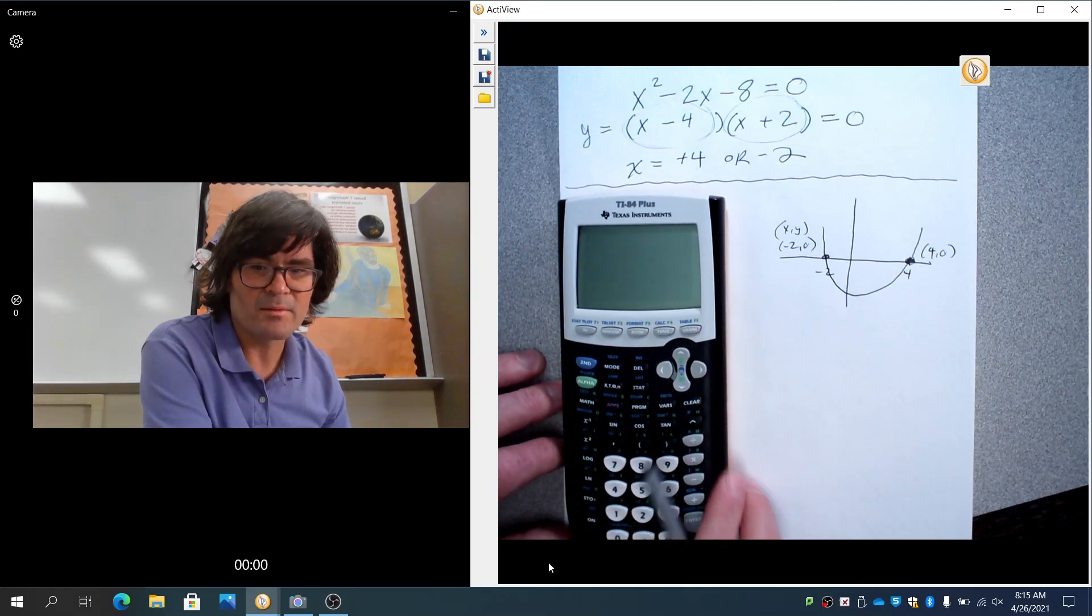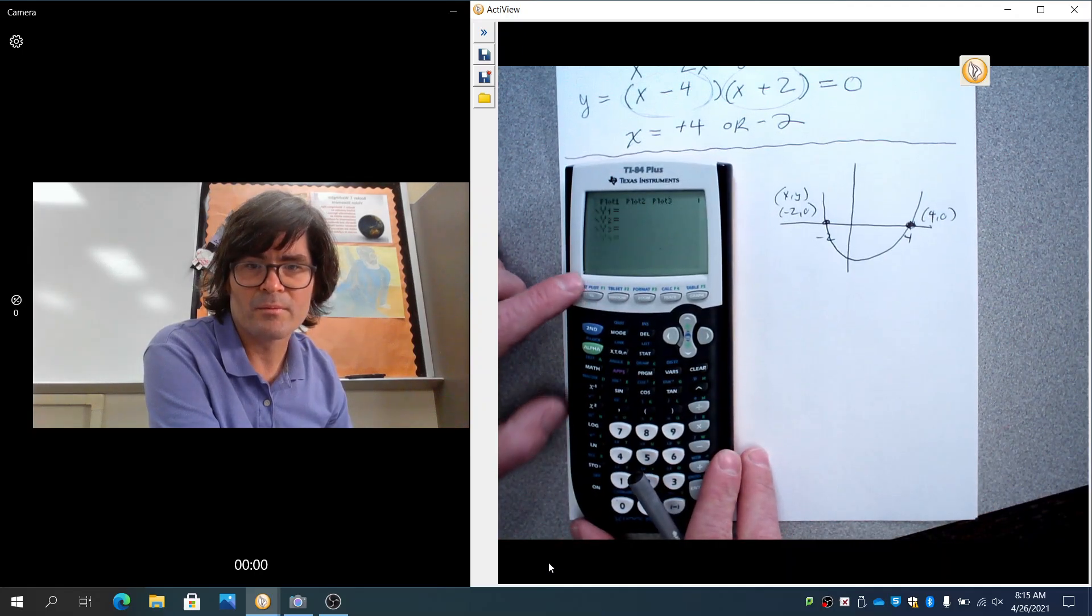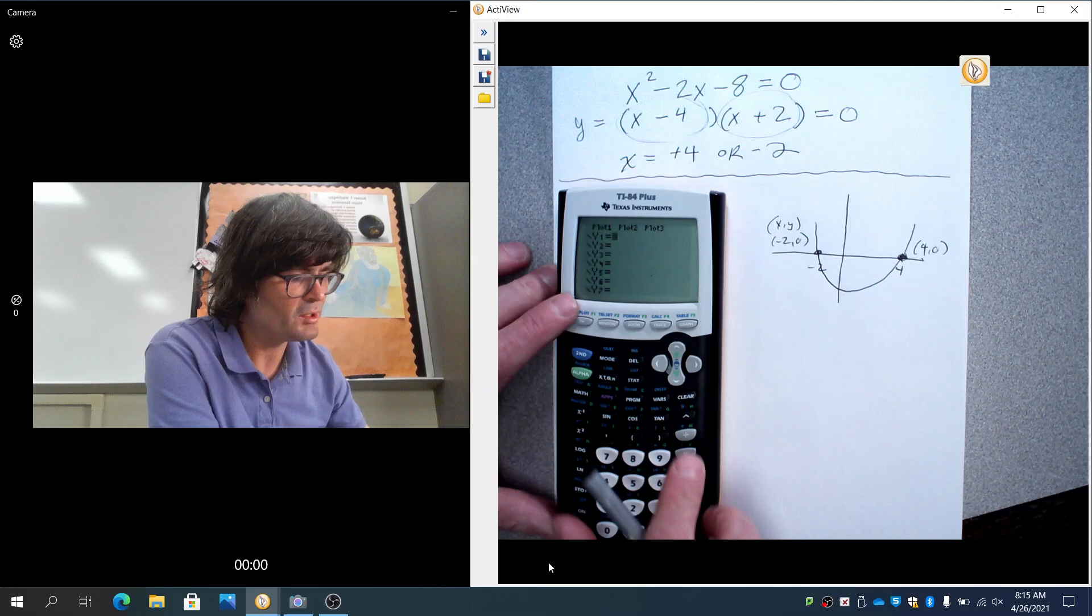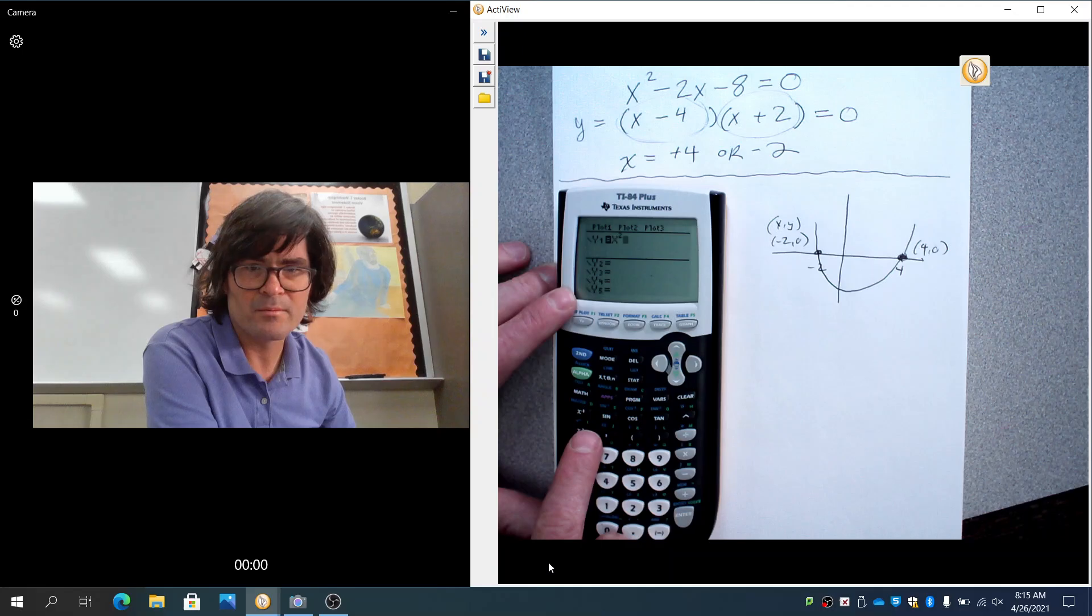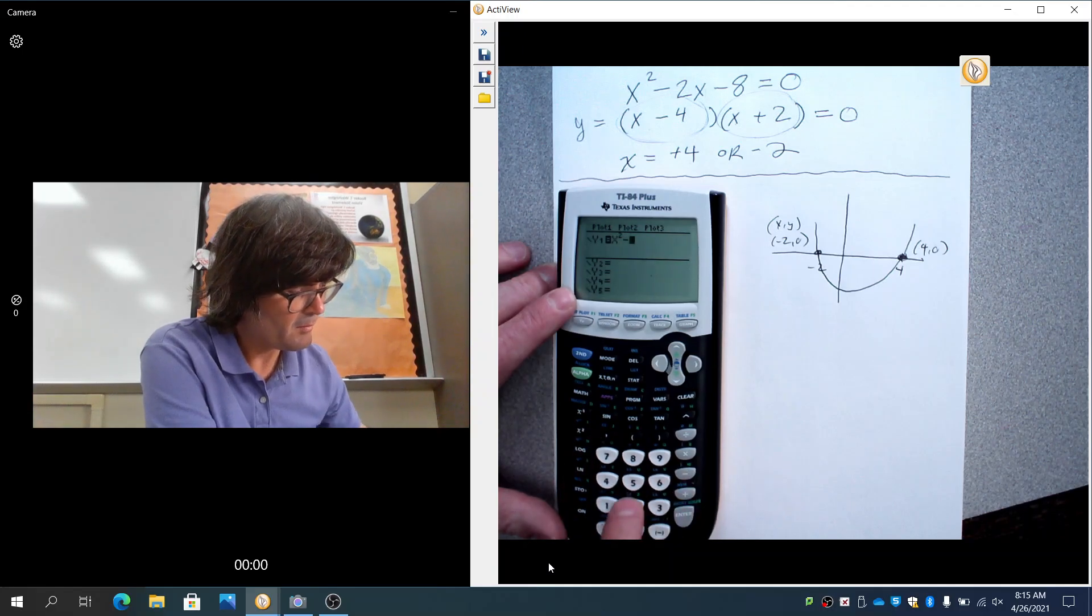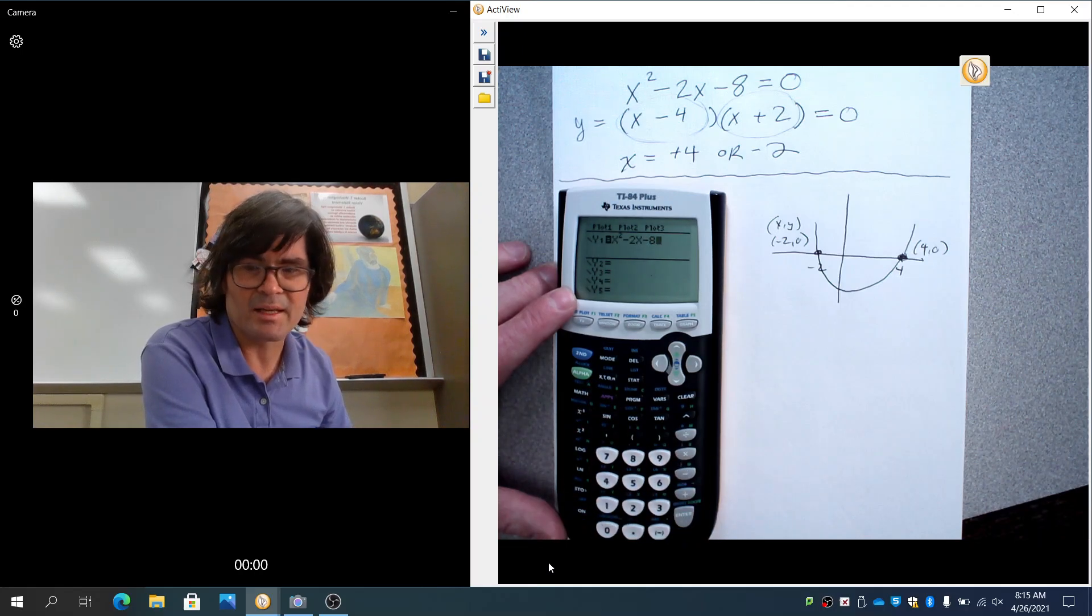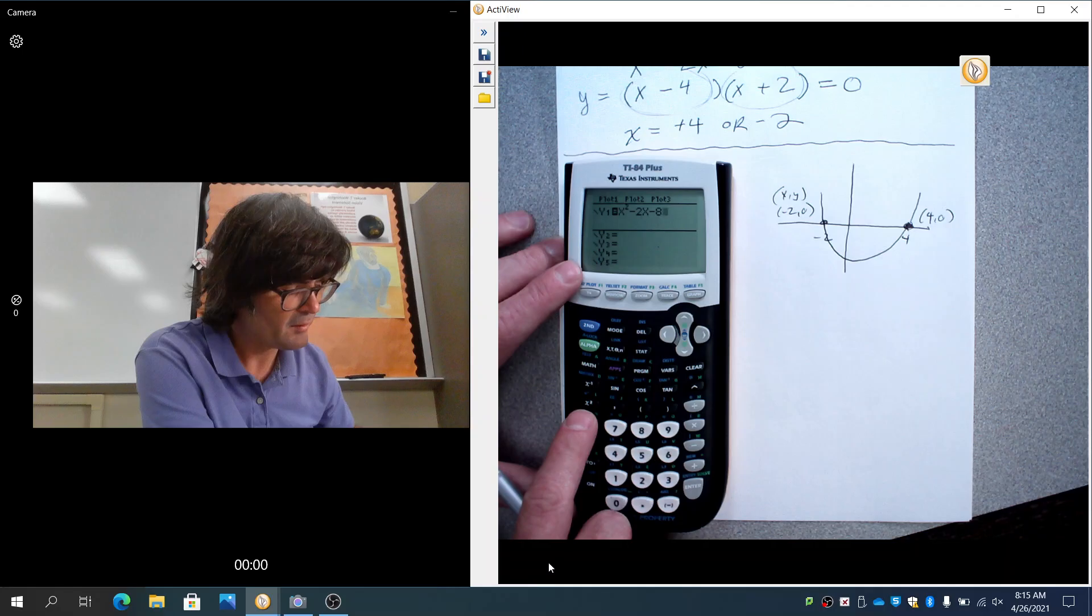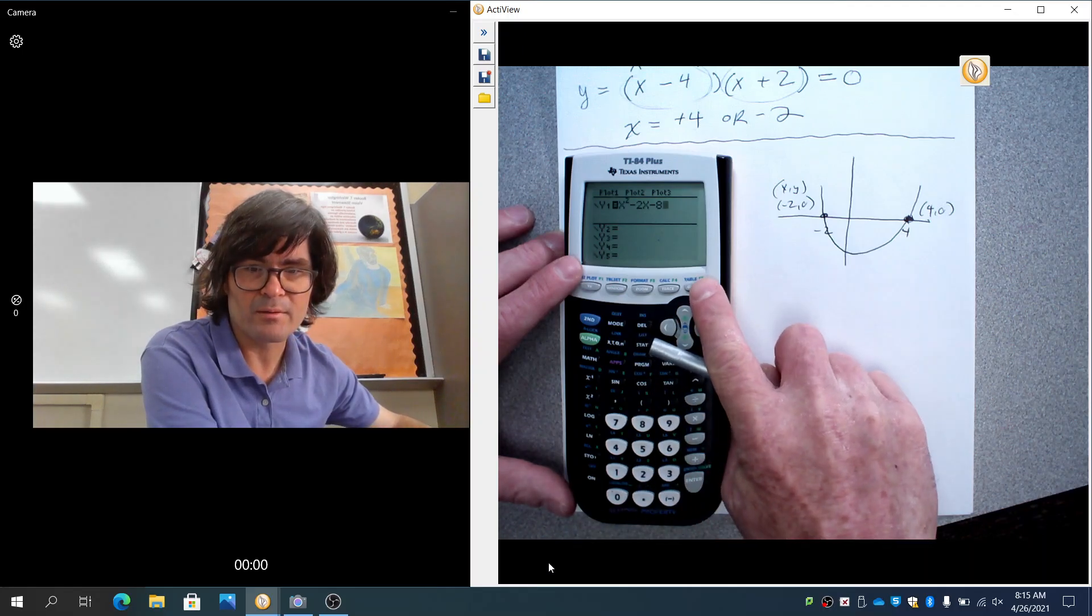So I'm going to turn this on and you hit y equals right here and then I'm going to type in x squared minus 2x minus 8. This is my x key right here. x the squared key is right here minus 2x and then minus 8 just like that. The minus and the negative are different so make sure you do the minus here because the calculator will mess that up. Then you hit graph right here.